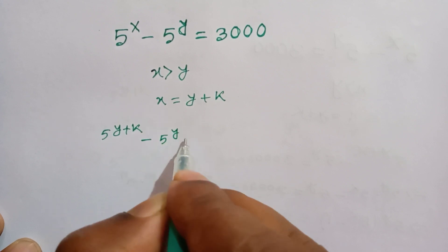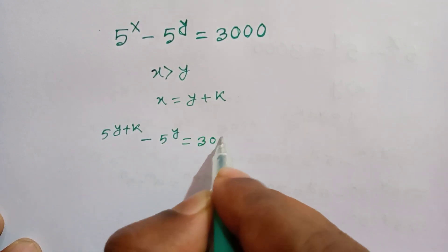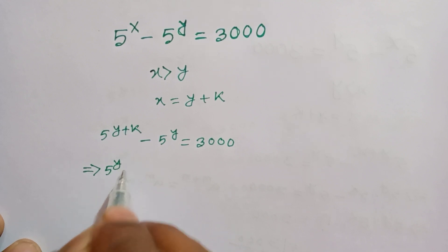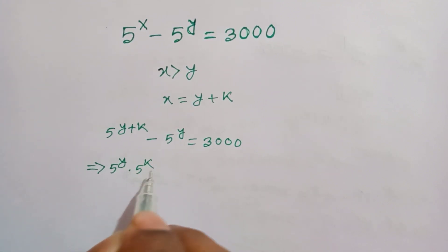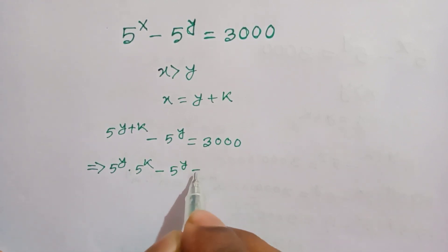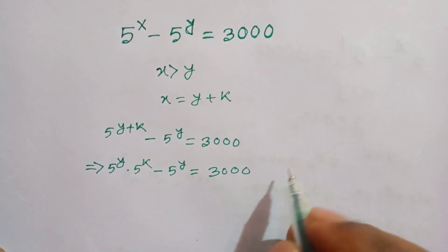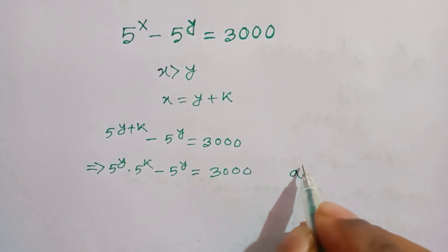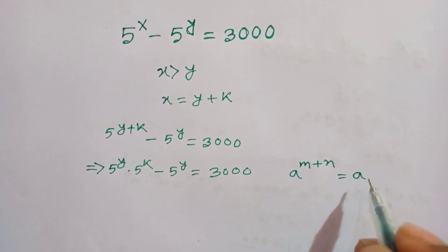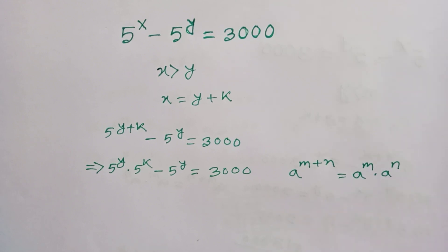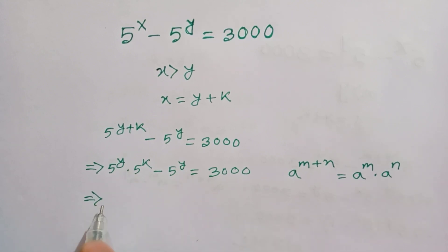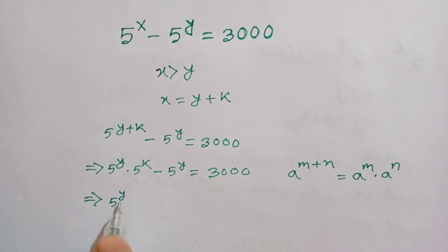So we get the equation: 5 to the power y plus k, minus 5 to the power y, is equal to 3000. We apply the formula a to the power m plus n equals a to the power m times a to the power n. So 5 to the power y is common and we take it outside.